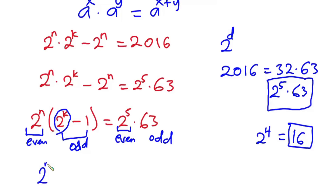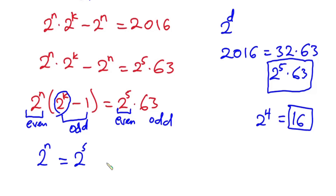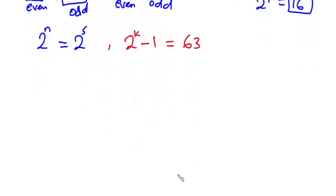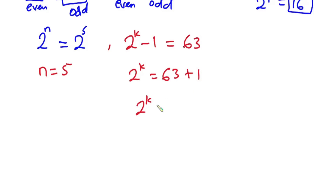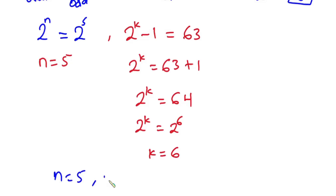Matching the even parts: 2 to the power n equals 2 to the power 5. And matching the odd parts: 2 to the power k minus 1 equals 63. From the first equation, since the bases are the same, we can equate the exponents, giving n equals 5. From the second equation, 2 to the power k equals 63 plus 1, which is 64. Since 64 equals 2 to the power 6, and the bases are the same, we get k equals 6. Now we know n equals 5 and k equals 6, but we still need to find m.